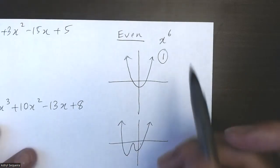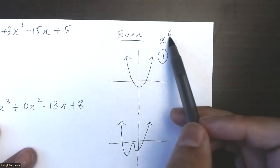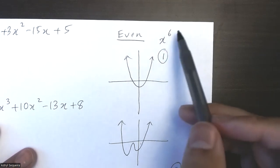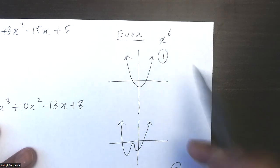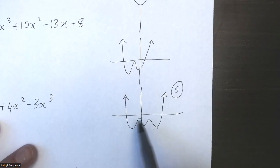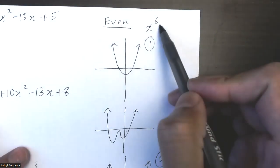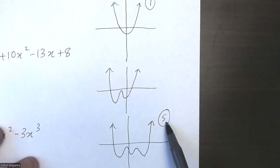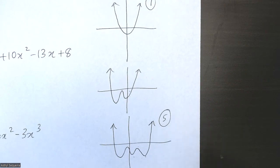To simplify it for even functions: the minimum number of turning points for an even function is always one. It doesn't matter if it's x^6, x^8, or x^10 — the minimum is always one. The maximum number of turning points will always be one less than the degree. So with degree six, the maximum number of turning points is five. You can use this logic for all kinds of even functions.